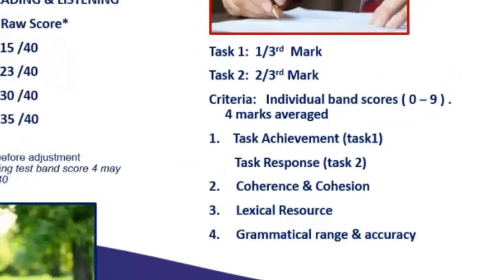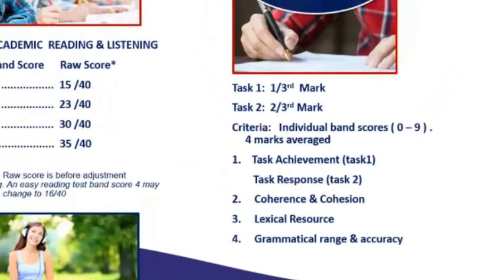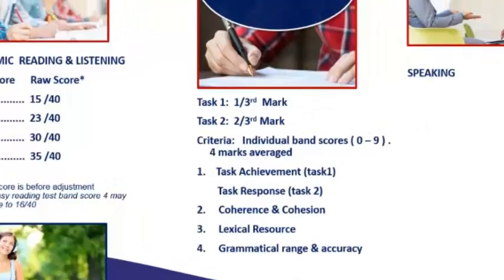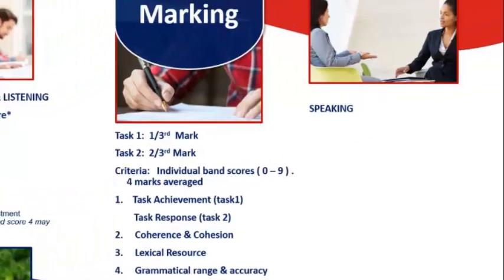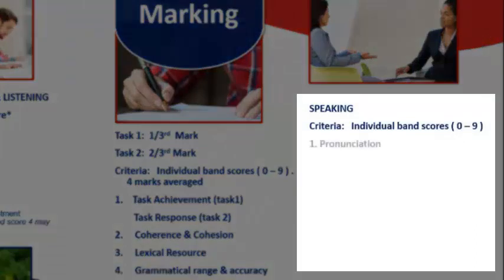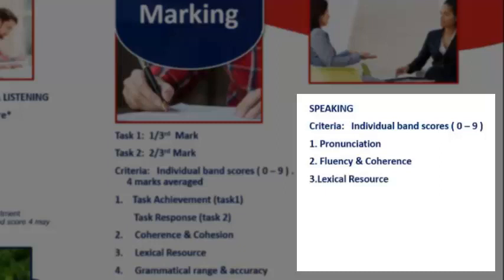In terms of the speaking test, you get a mark for four criteria again, and again it's from 0 to 9 in terms of the band score. Your four marks are for pronunciation, fluency and coherence, lexical resource (again, that's vocab), and grammatical range and accuracy.